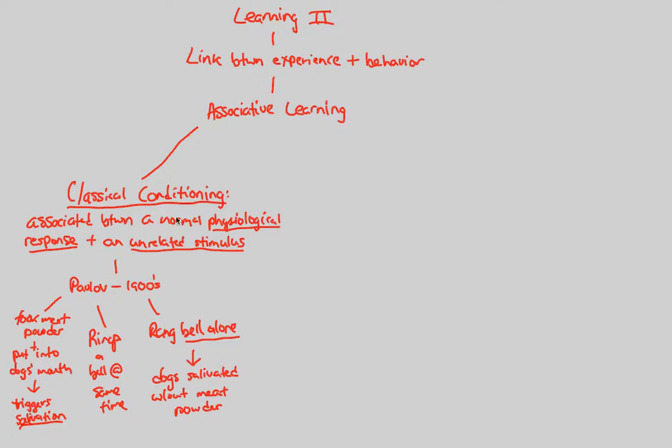So, instead of classical conditioning, there's another type of associative learning where we associate something with something else to create a link between experience and behavior and also done by a very famous psychologist. And that type of learning is called operant conditioning. And we're going to do the same thing. We'll broadly define it right underneath and then work off of that definition.